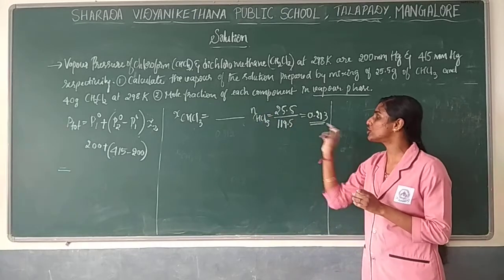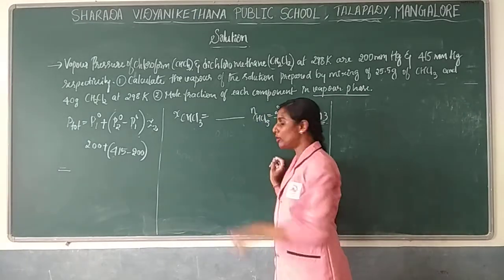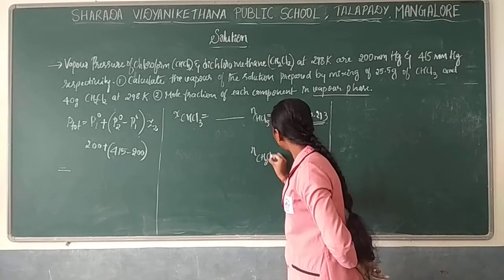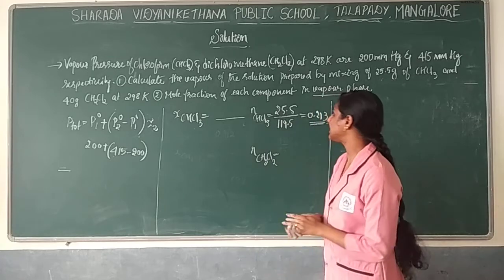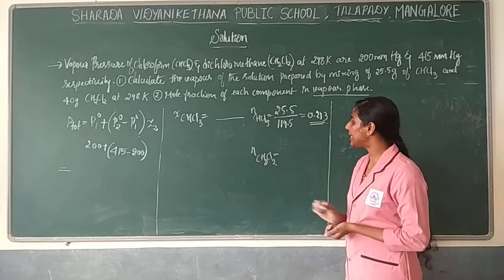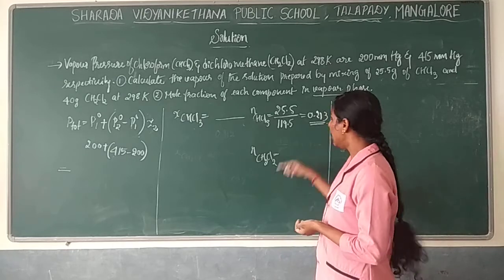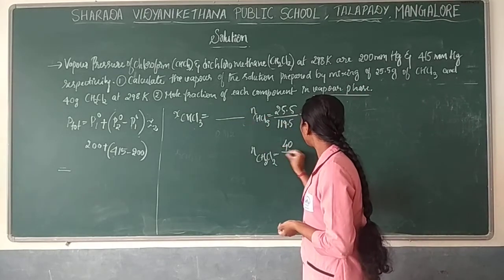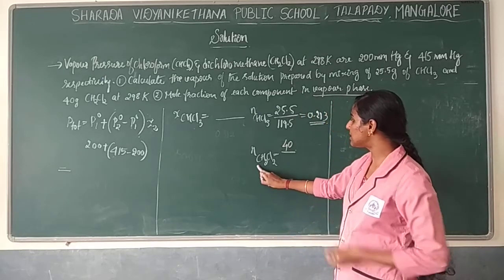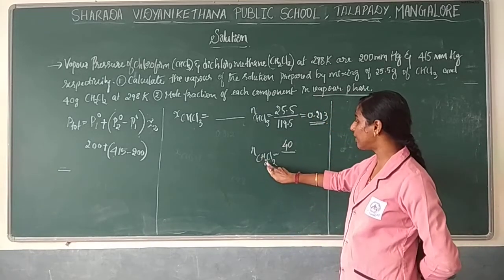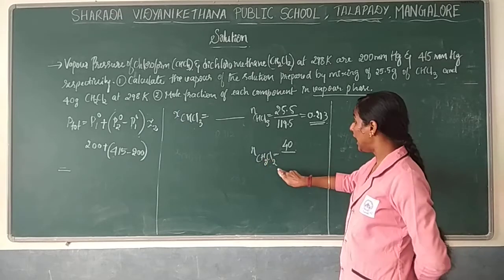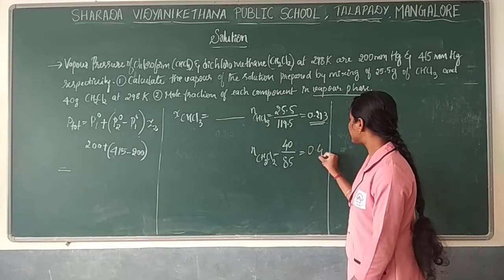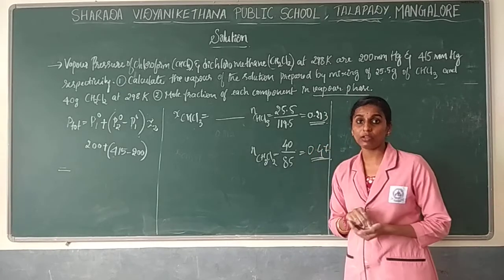Now find the number of moles of dichloromethane (CH2Cl2). Again, moles = mass divided by molar mass. The mass given is 40 grams. The molar mass is: carbon 12, hydrogen 1 times 2, chlorine 35.5 times 2, giving 85 g/mol. So the number of moles of dichloromethane = 40 / 85 = 0.47 mol.